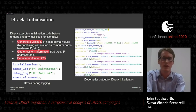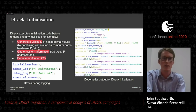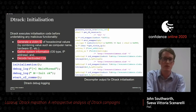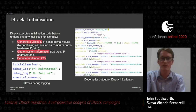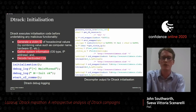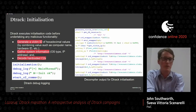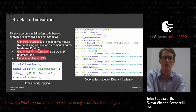Before any malicious code is executed, D-Track performs its initialization routine. This consists of generating a victim ID by combining values such as the computer name and hardware ID of the infected system. It then gathers basic system information such as the operating system type and IP address, and finally decodes a number of hard-coded command and control server addresses. Notably, the threat actor forgot to remove their debug logging messages, which spells out key functionality — in this case showing that the main thread has begun and that initialization finished successfully.